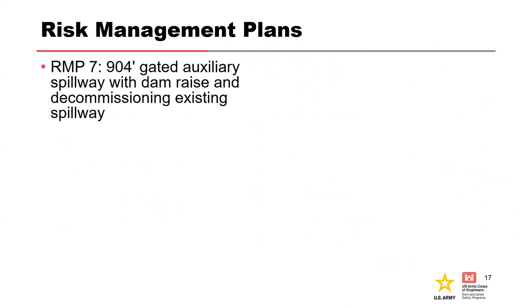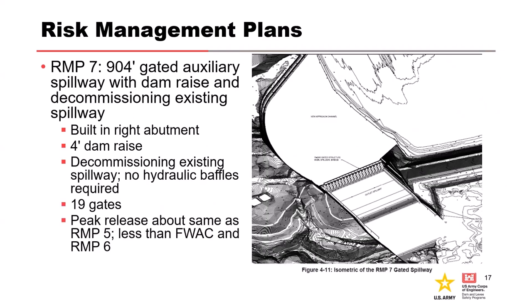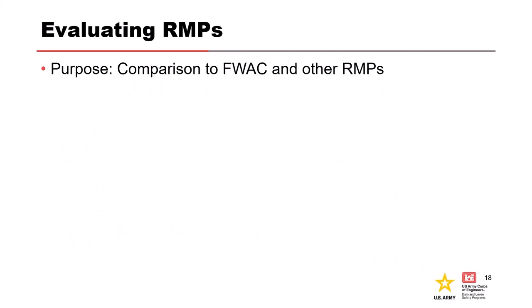RMP7 would be a 900-904-foot auxiliary spillway built off the right abutment. They would also need to raise the dam by four feet and decommission the existing spillway. Essentially, this is building a new dam — a dam raise and a whole new spillway while decommissioning the other one. It's a massive project. The next step is to evaluate those final array of RMPs against the FWAC condition to determine the level of risk reduction each RMP provides.